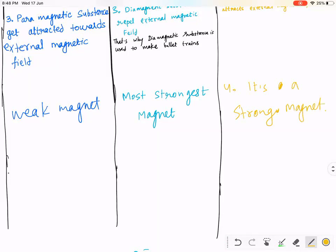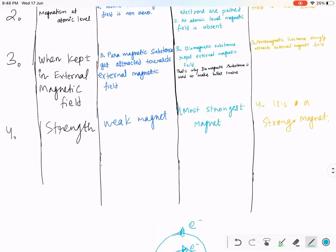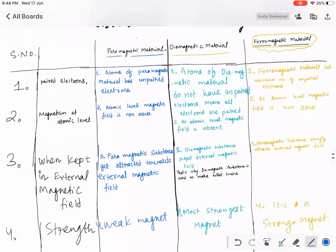Now you will ask: why is diamagnetic the strongest, and not ferromagnetic? At the atomic level, diamagnetic material does not represent magnetic property, but the moment you apply an external magnetic field, the diamagnetic material gets repelled most strongly. Ferromagnetic material gets attracted towards the external magnet, but diamagnetic material gets repelled even more strongly.